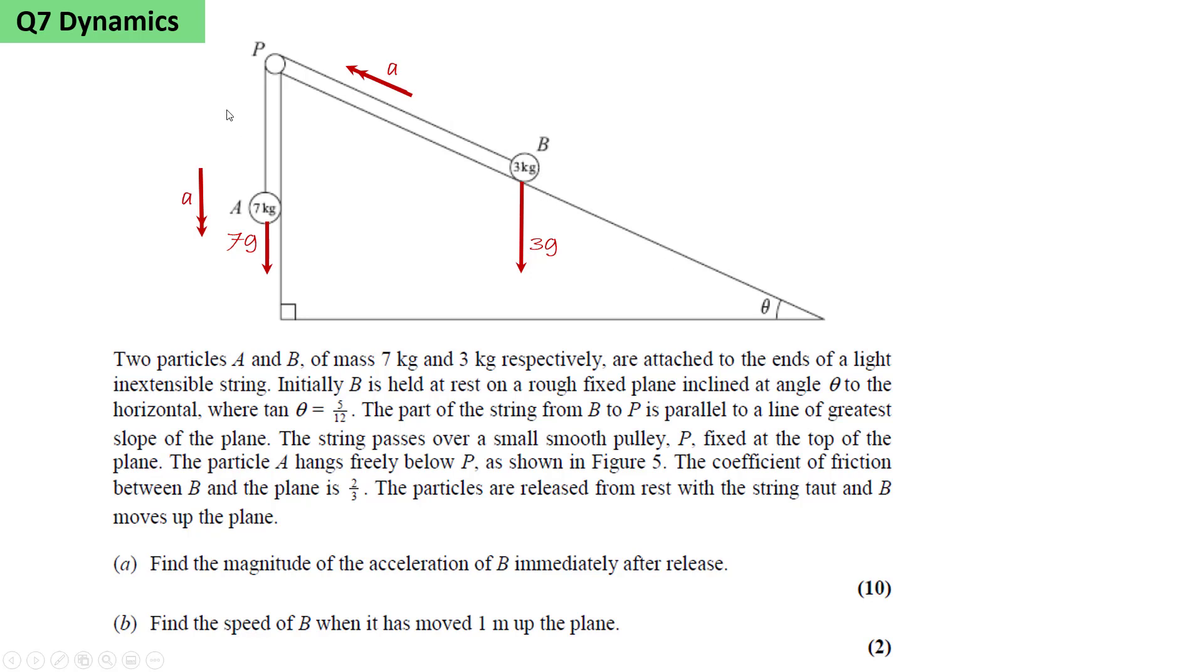Initially B is held at rest on a rough fixed plane, so we're going to add a normal reaction R. The angle between R and the weight 3g will be theta. We add the friction F acting down the plane. We're told that tan theta equals 5/12.